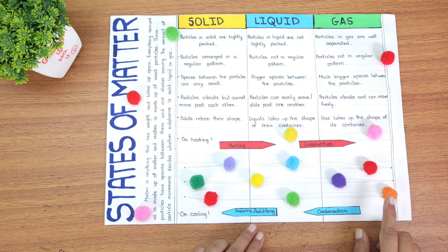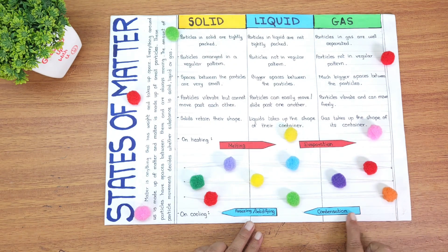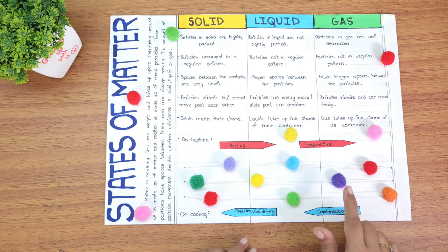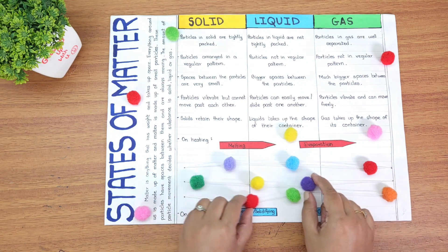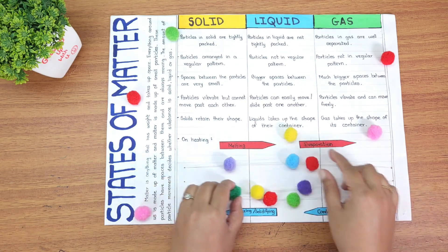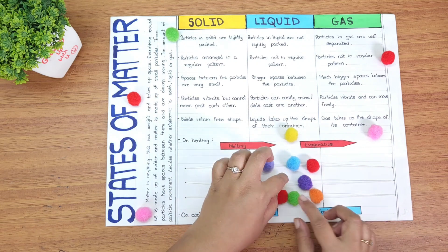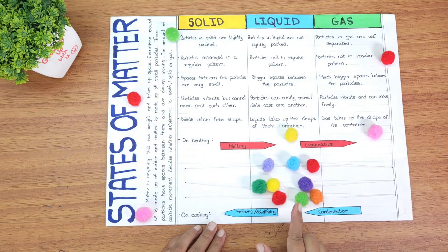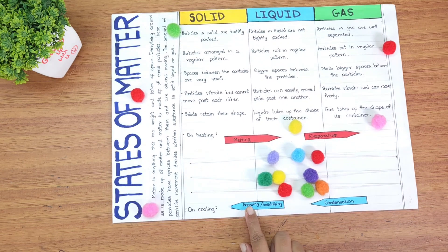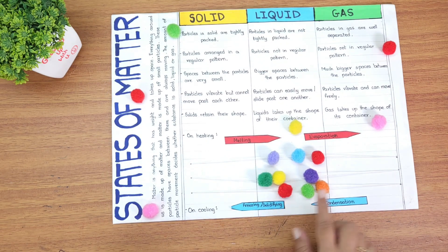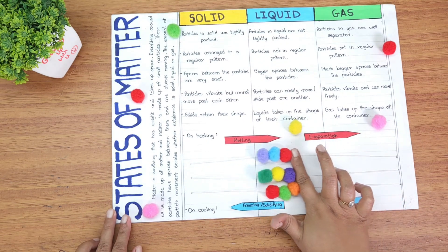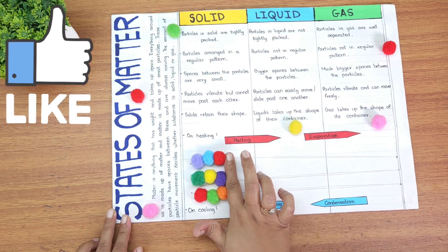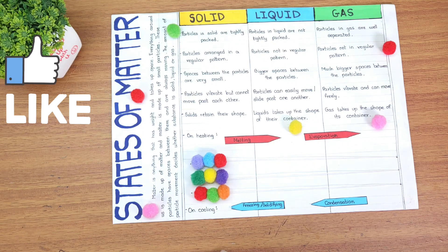When we cool the gas, this is called condensation, where the gas turns to liquid. The spaces between the particles will reduce. When we cool it further, it is called freezing or solidifying, and this turns into a solid again.